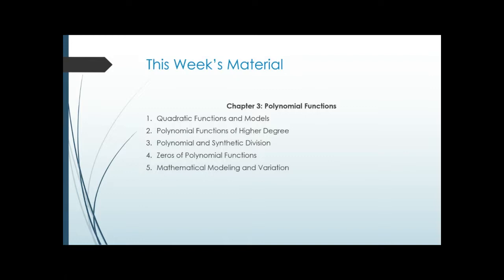Section 3.5 is mathematical modeling and variation — that's the word problem section. Polynomials actually show up a lot in business predictions. We did a prediction of a company using a straight line, but companies are not straight lines — they go up and they go down. You can use polynomials to model those because polynomials go up and down. Polynomials are used a lot more in business for models, trying to predict what things are going to look like or to fit current data.